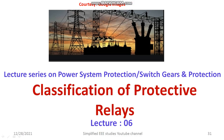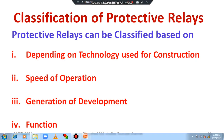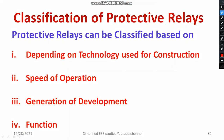Welcome to the playlist of power system protection. In this session I will be discussing the classification of protective relays. Protective relays can be classified based on the following criteria: number one, depending on the technology used for construction; second, speed of operation; third, generation of development; and finally, based upon the function. I would like to discuss how to classify protective relays based on each criterion.